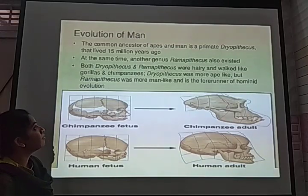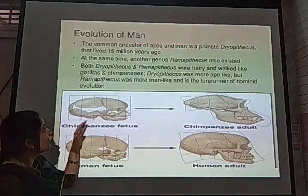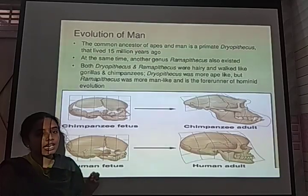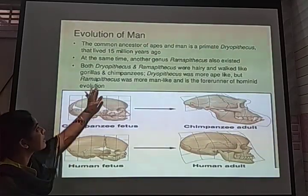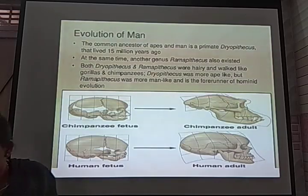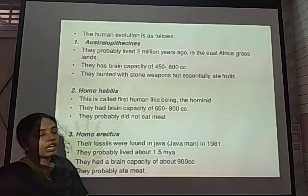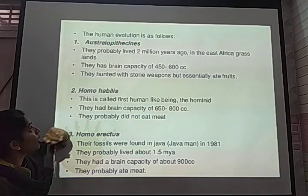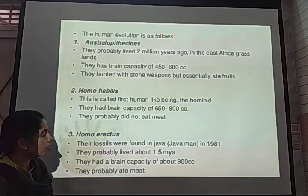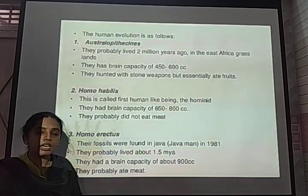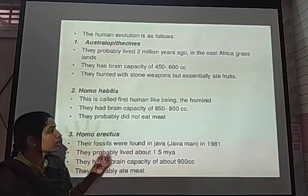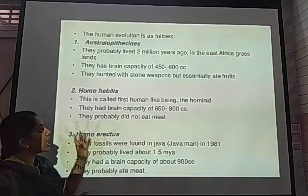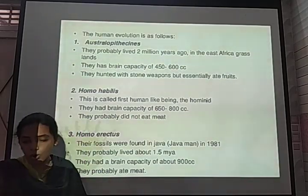In the evolution of man, about 15 million years ago, the primates that lived on the earth's surface were called Dryopithecus and Ramapithecus. The stages of human evolution include Australopithecus, Homo habilis, Homo erectus, and Homo sapiens. Based on their brain capacity and different features, they have been distinguished into different forms.